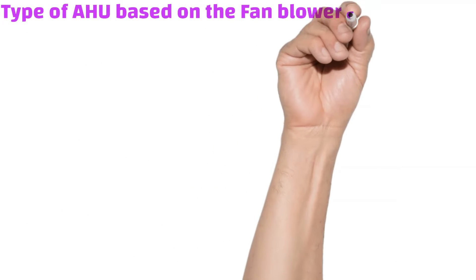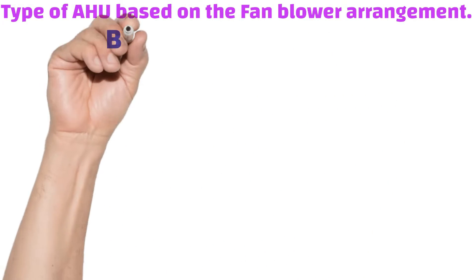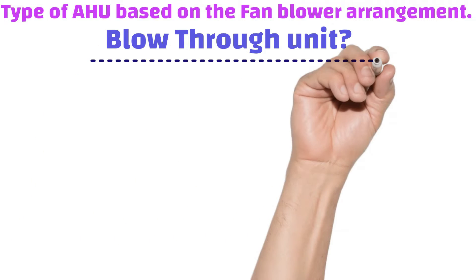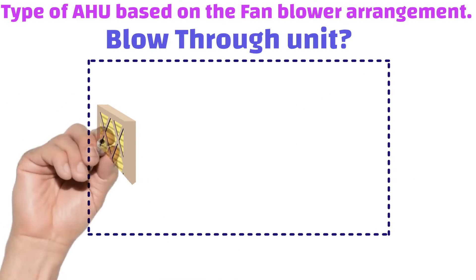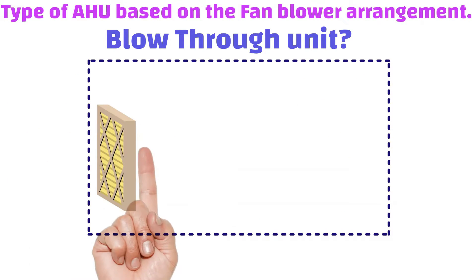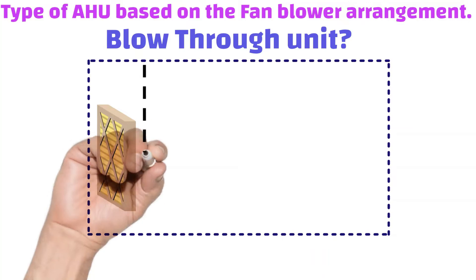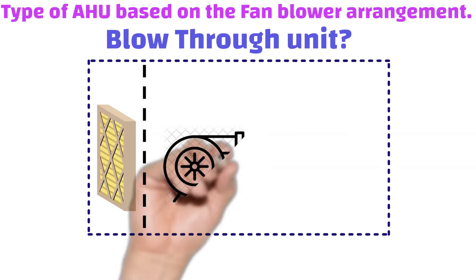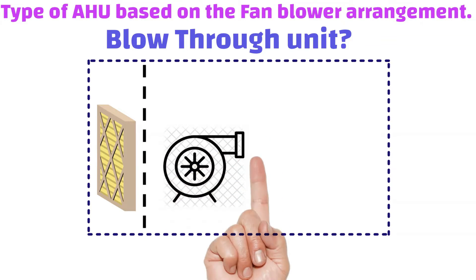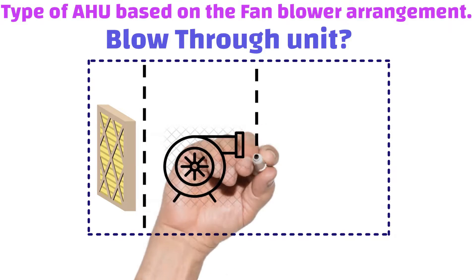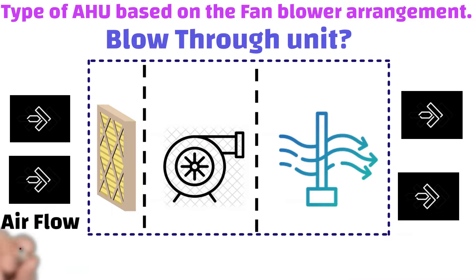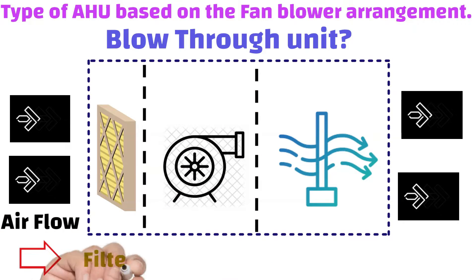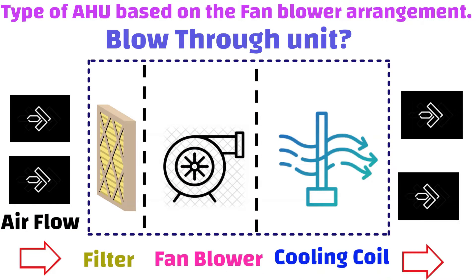First, we see about the blow through type of AHU based on the fan blower arrangement. The fan blower is located upstream of the unit, which is before the cooling coil, and this is called a blow through system. The fan blows the air through the cooling coil before discharging it to the space being conditioned or to the ducting system.